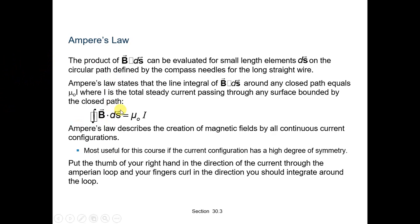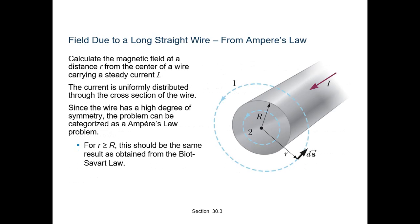This means the closed circular path encloses the current. Ampere's Law describes the creation of magnetic fields by all continuous current configurations. When the current configuration has a high degree of symmetry, put your right thumb in the direction of current through the Ampere loop, and your fingers curl in the direction you should integrate around the loop, giving the direction of the magnetic field.